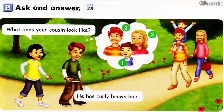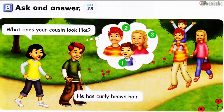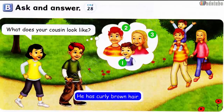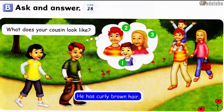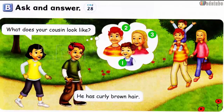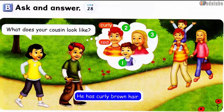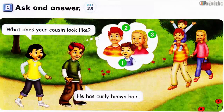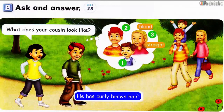Page 50. B: Ask and answer. What does your cousin look like? He has curly brown hair. Number 1: What does your cousin look like? He has curly brown hair. Number 2: What does your uncle look like? He has curly red hair. Number 3: What does your aunt look like? She has straight blonde hair.